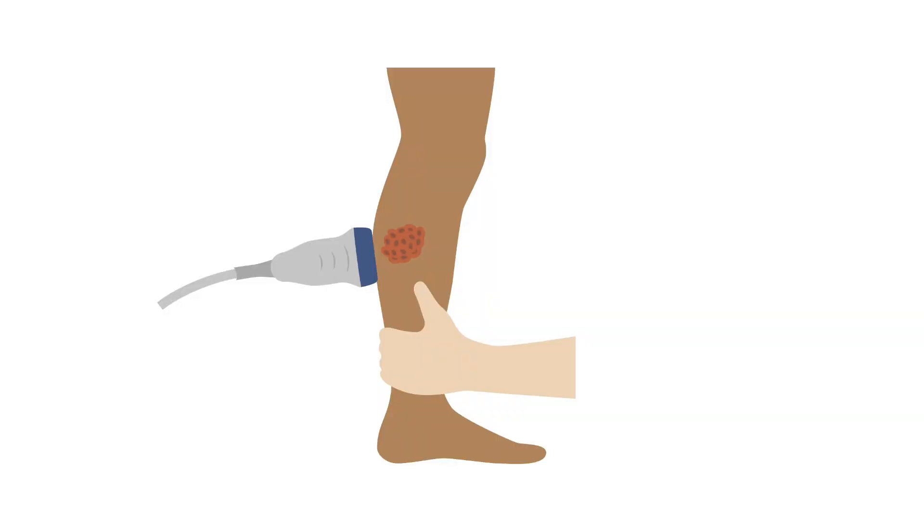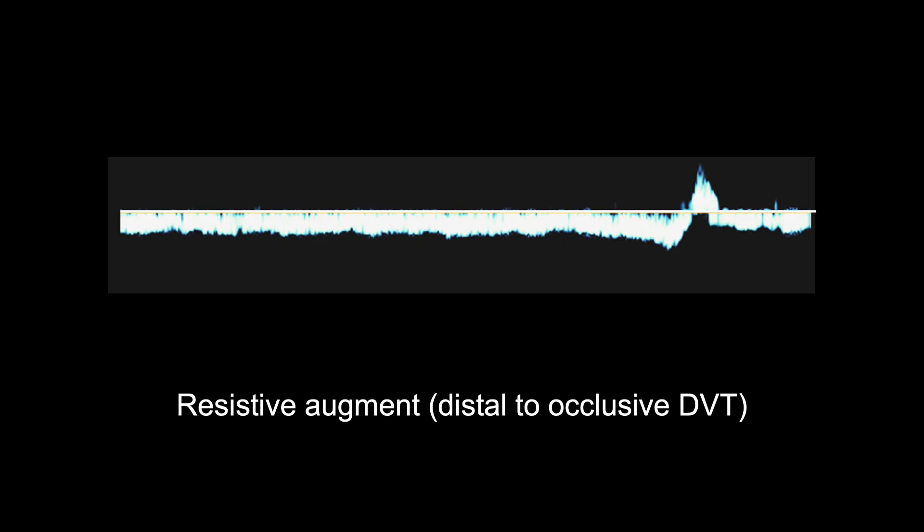An augment distal to an occlusive DVT will be resistive, and show as an absence of any inverted peak or just a small spike below the baseline. Here, you can see continuous venous flow with a resistive augment distal to a significant DVT. The spike above the baseline is normal closure of the valve.